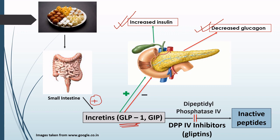So GLP-1 is increasing insulin and decreasing glucagon, and ultimately there will be a decrease in the blood sugar level. If we have a GLP-1 receptor agonist, it acts on the GLP-1 receptor, activating it, which again increases insulin and decreases glucagon — ultimately decreasing blood sugar. This is how a GLP-1 receptor agonist acts.